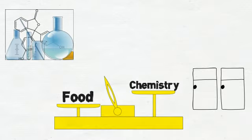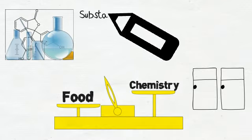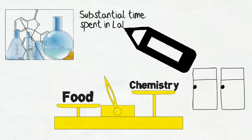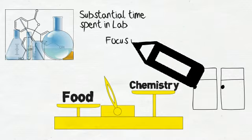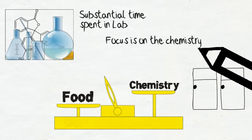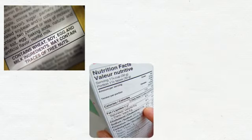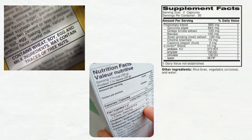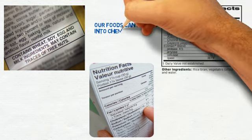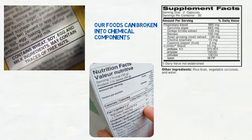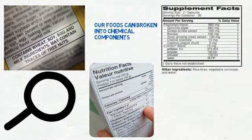A food chemist spends a lot of time in a lab which is also his or her kitchen. But unlike a chef who focuses mainly on food, the food chemist focuses on the chemistry of food. As the ingredients on any packaged food item would demonstrate, our foods can be broken down into chemical components. And food chemists focus on these components.